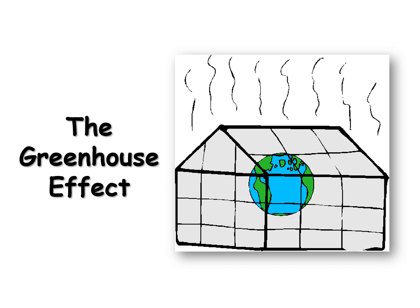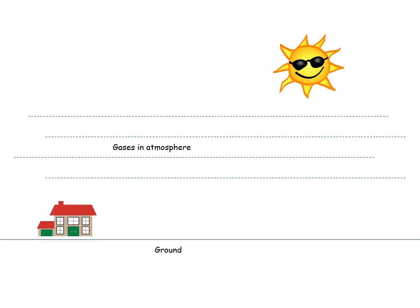The greenhouse effect refers to the warming of the Earth's atmosphere, especially over the last 100 or 200 years. This is how it occurs.